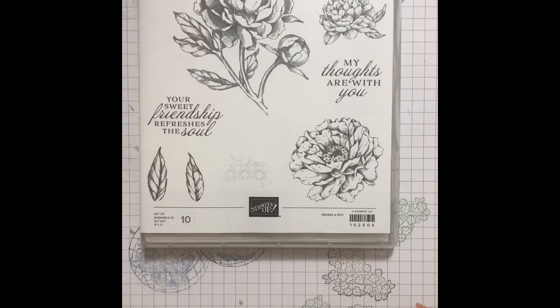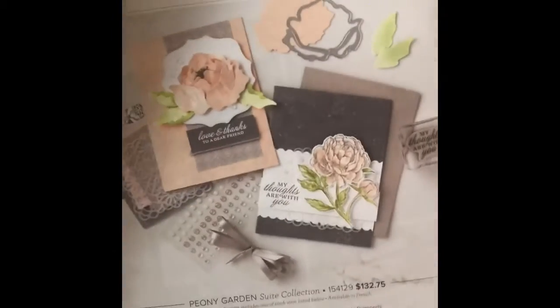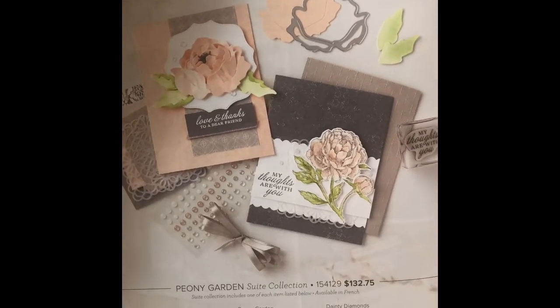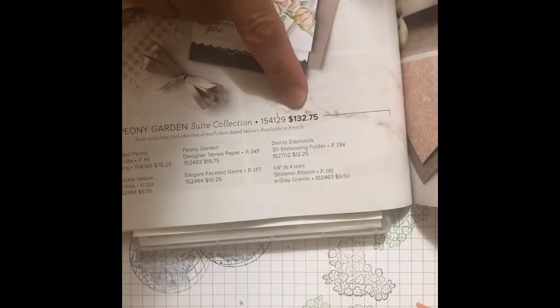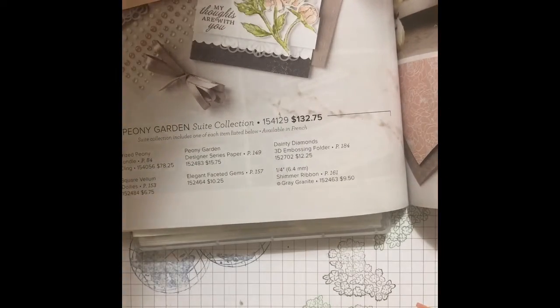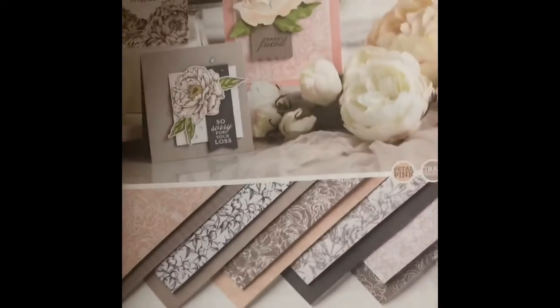It is found on page 82 of our new idea book and catalog, and this is the suite right here. Suites are inclusive of everything that coordinates with this set. This suite is $132.75 but it includes everything from ribbon to doilies to paper to the stamp set and the sizzlets.